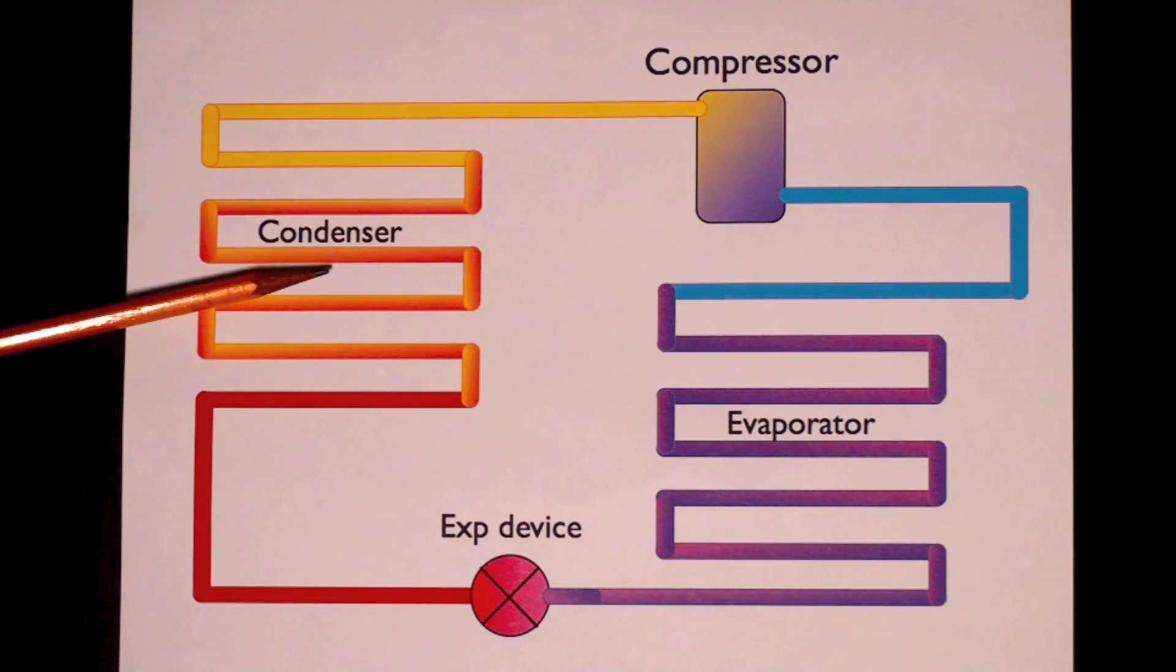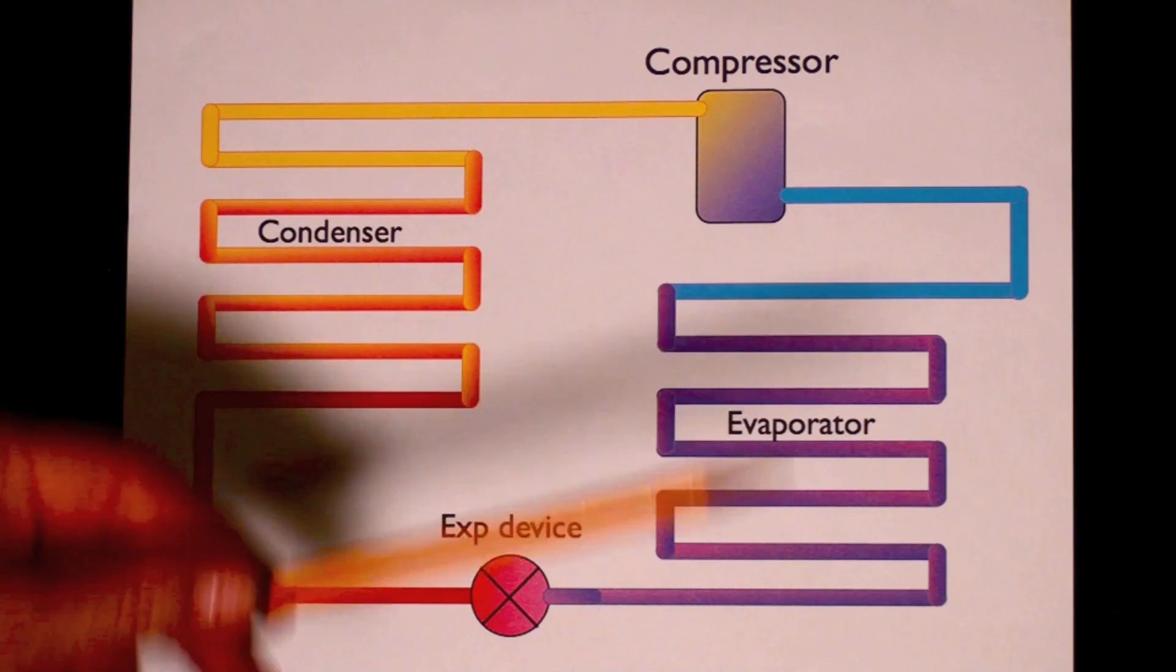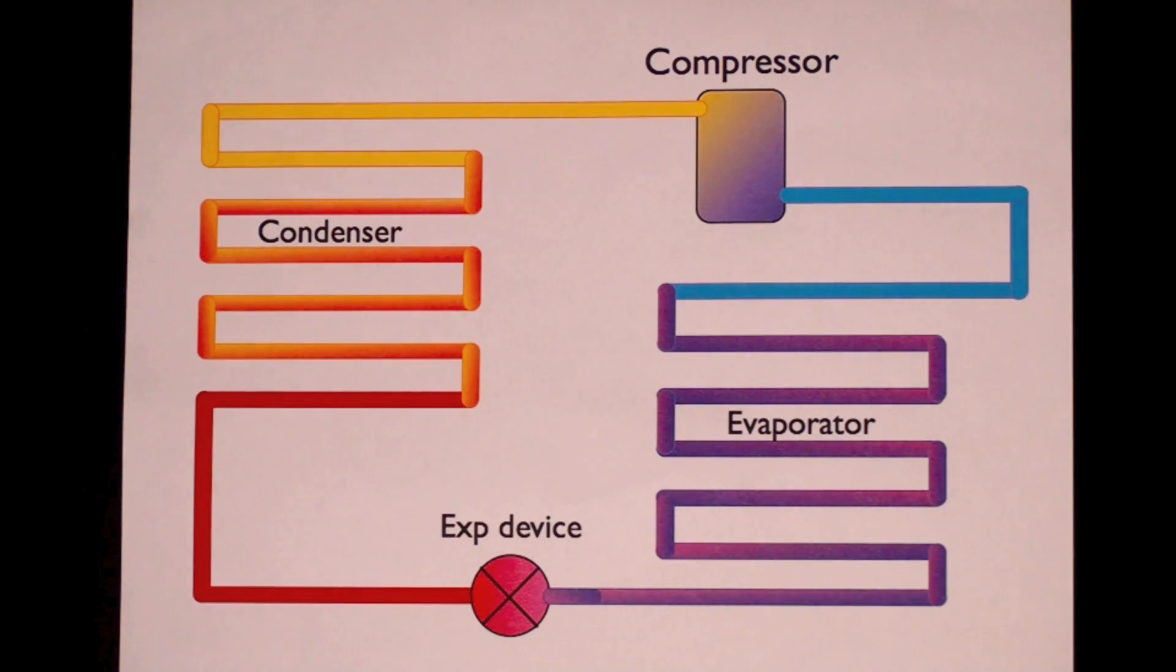High temperature, releasing high temperature and pressure, releasing the heat. Through the expansion device to the evaporator, low pressure, absorbing heat, going back to the compressor and doing it all over again.